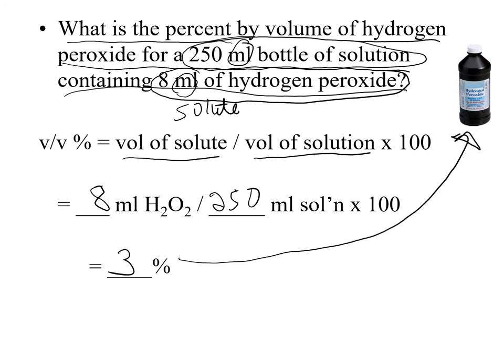Note the significant figures: the value 8 has only one significant figure, so the final answer can only have one sig fig — giving 3%.